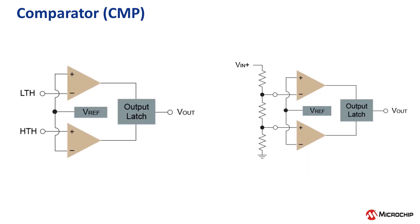Due to the PIC-18 Q71 having multiple comparators, you can create custom circuits such as a windowed comparator, which allows for a more precise comparison by determining whether the input falls between two user-defined reference voltages.